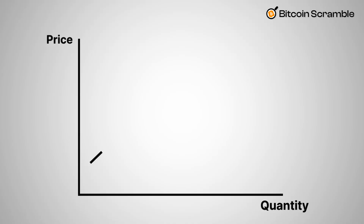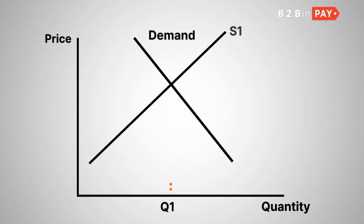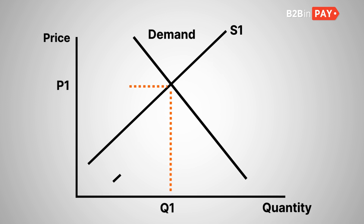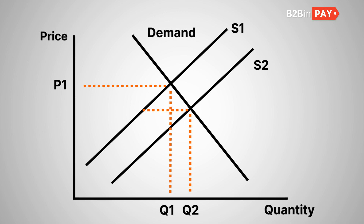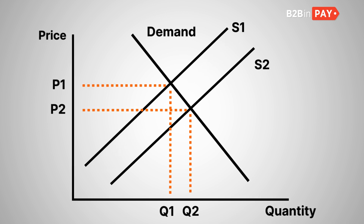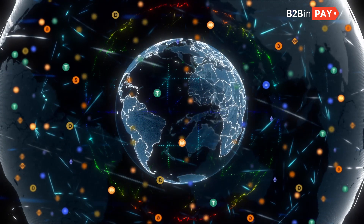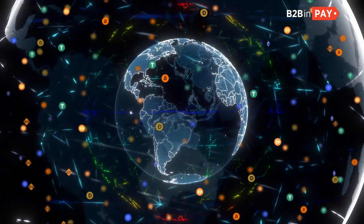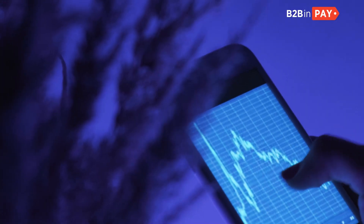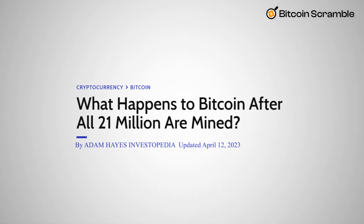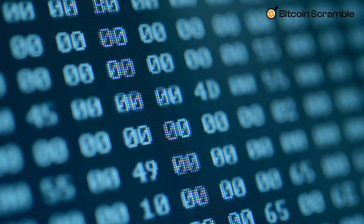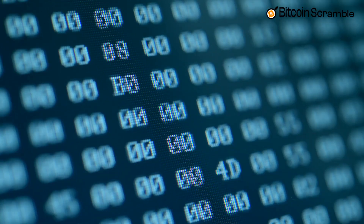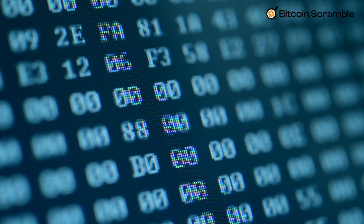It shows how much risk a coin will likely depreciate in the future and whether the tools are in place to control this process. According to economic laws, if too many currency assets are released into circulation, they depreciate instantly. This also applies to crypto, which has an unlimited supply. As a rule, crypto assets enter the market according to a predetermined algorithm.